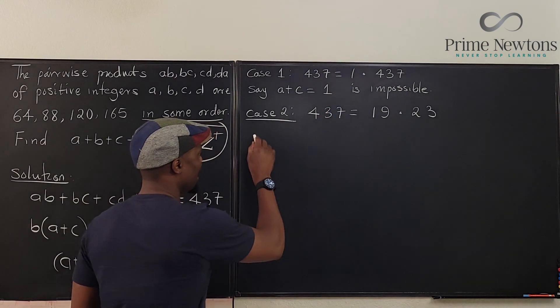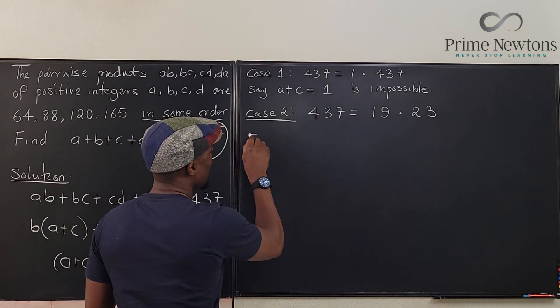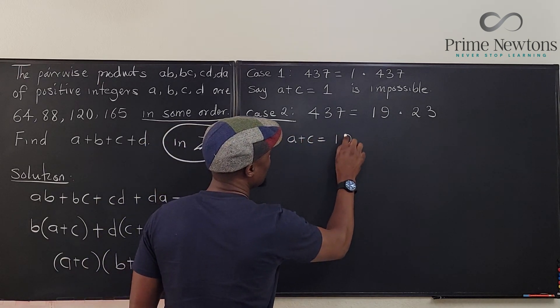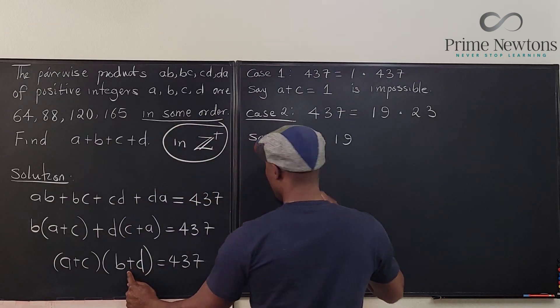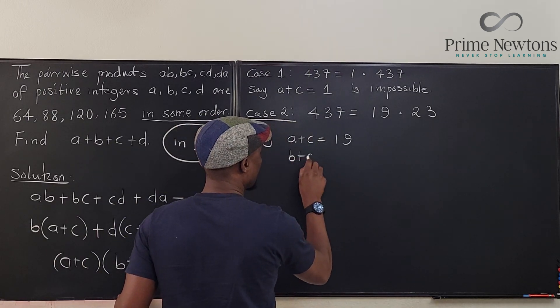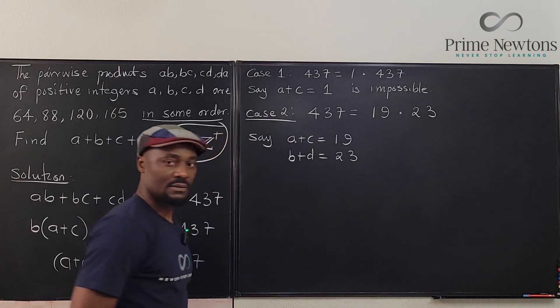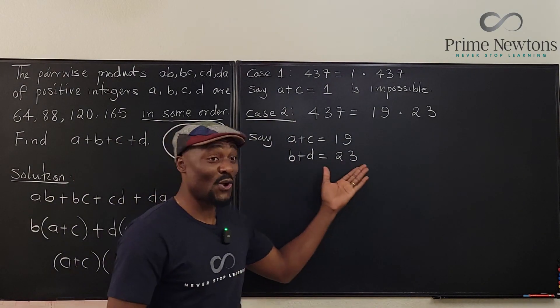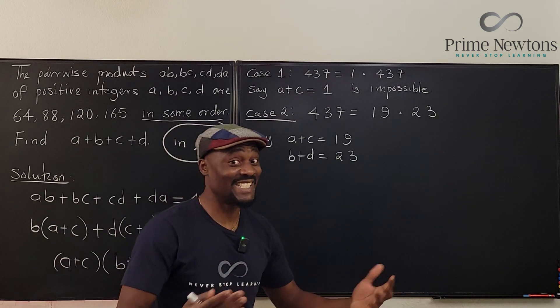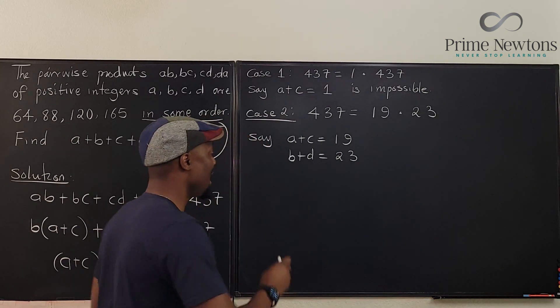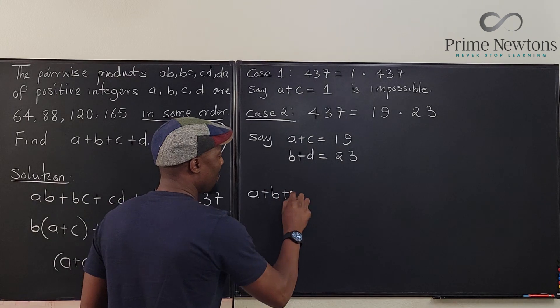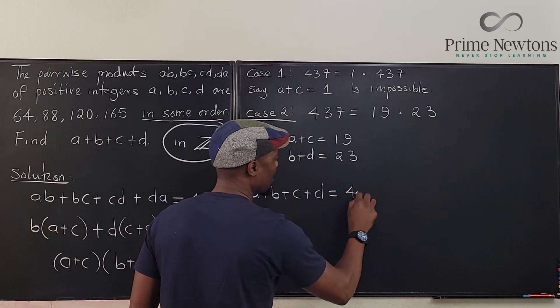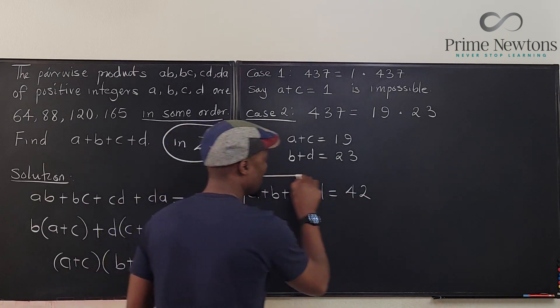We can easily say then, say A plus C is equal to 19, then the other one, B plus D, will be equal to 23 based on the structure we have here. And by the way, remember you're not supposed to solve and find A, B, C, D. No. You just want to find A plus B plus C plus D. The sum of these two will have to be 42, and this is the answer to your question.